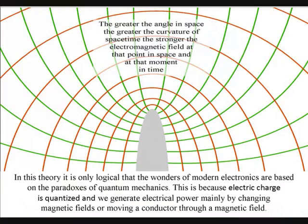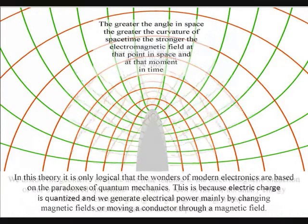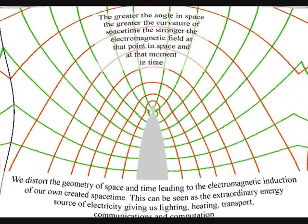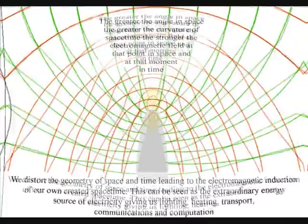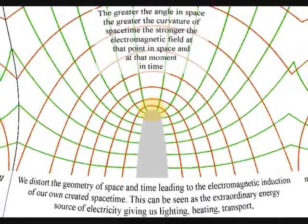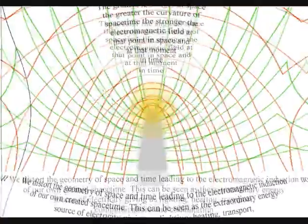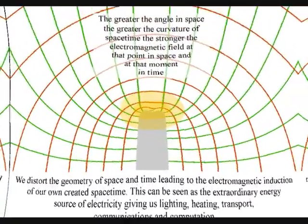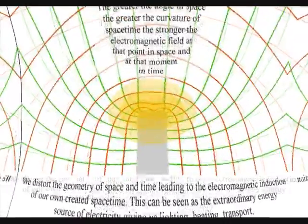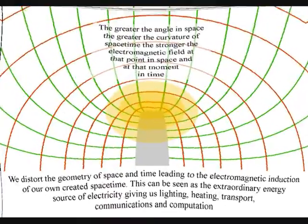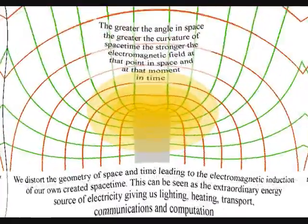This is because electric charge is quantized, and we generate electrical power mainly by changing magnetic fields, or moving a conductor through a magnetic field. This will distort the geometry of space and time, leading to the electromagnetic induction of our own created space-time, in other words, electricity.